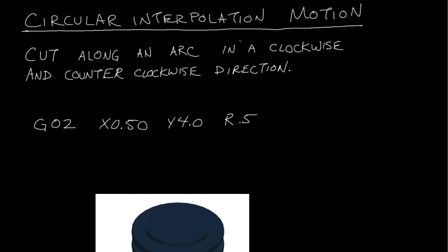In this video lecture I'm going to go over circular interpolation motion or G-code. To cut along an arc in a clockwise or counterclockwise direction you need to use G-code such as G02, which is clockwise, or G03, which is counterclockwise.